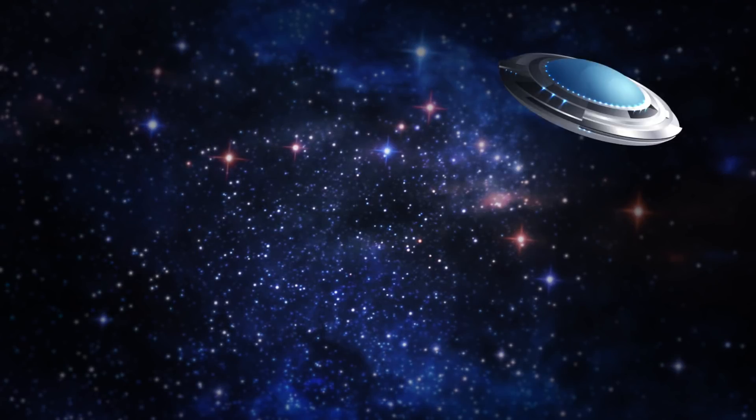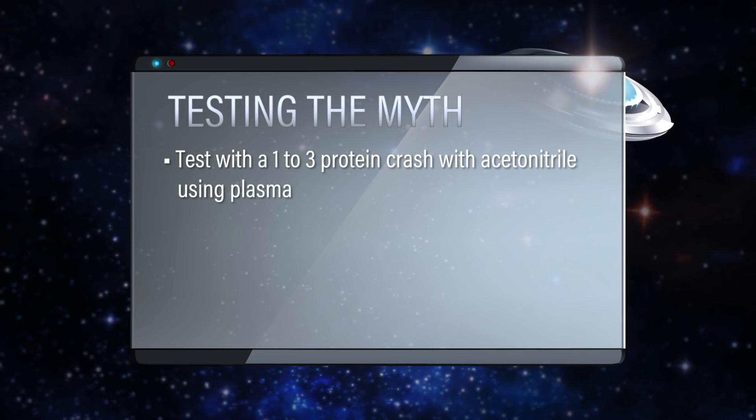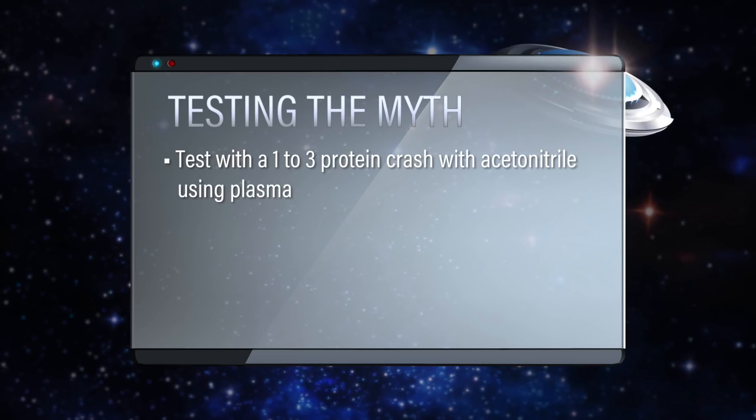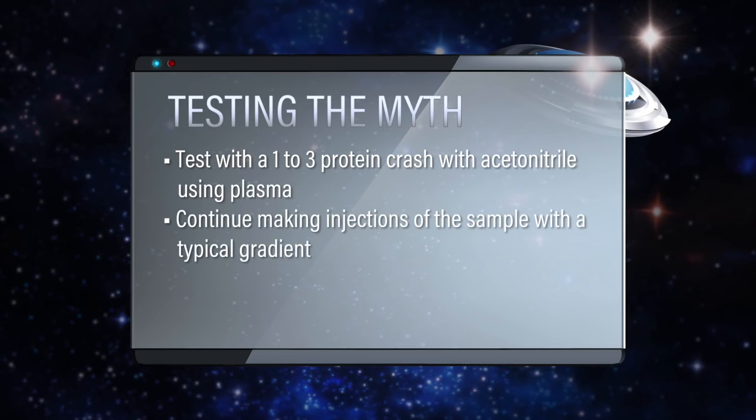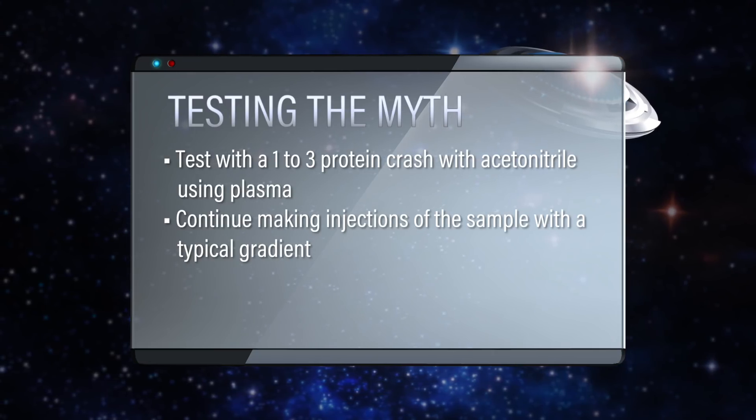So this is definitely one I'm excited to look at. What we want to test is the ability to just use protein precipitation and see if we can get reproducible quantification and chromatography. We'll do a traditional protein precipitation — a one-to-three protein crash with acetonitrile in our sample. We'll use plasma.